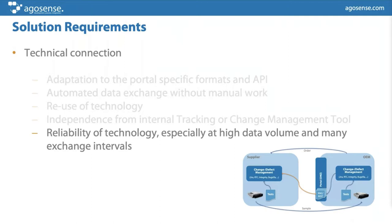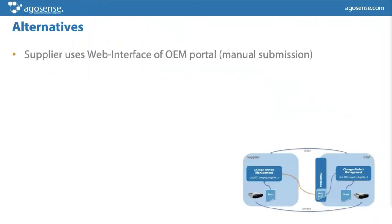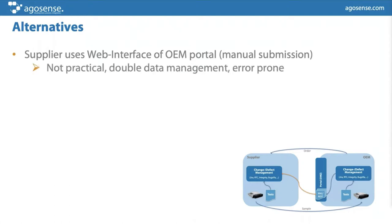The alternatives commonly used in these scenarios: OEMs provide web interfaces for reported issues, which usually results in a lot of copy-and-paste work managing data on both sides — very error prone. Some customers come to us from self-programmed systems or from a consulting company's solution, which usually has a high degree of maintenance burden after first introduction.